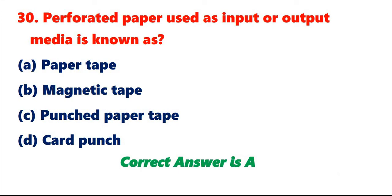Question 30: Perforated paper used as input or output media is known as A. Paper tape. B. Magnetic tape. C. Punched paper tape. D. Card punch. Correct answer is A.